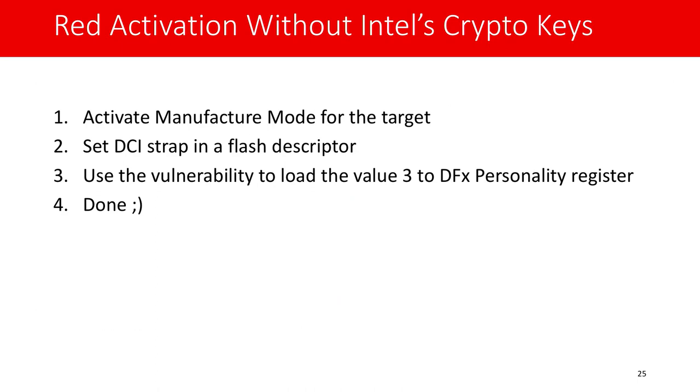Nach vier einfachen Schritten: Als erstes wird der Herstellermodus für das Ziel aktiviert. Dann wird DCI-Strap in der Flash-Beschreibung gesetzt. Dann wird diese Verwundbarkeit benutzt, um den Wert 3 in das DFX-Personality-Register zu schreiben. Dann ist der rote Modus aktiviert und man kann die Interna des Geräts erforschen.